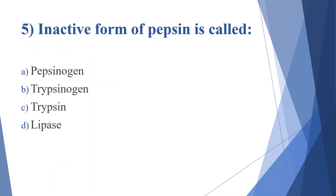Fifth question: inactive form of pepsin is called. Option A: pepsinogen. Option B: trypsinogen. Option C: trypsin. Option D: lipase. Answer is option A, pepsinogen.